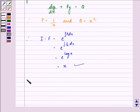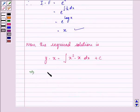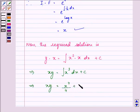Now the required solution is y into integrating factor equal to integral q into integrating factor dx plus c. That gives us xy is equal to integral x cube dx plus c. That is xy is equal to x raised to the power 4 upon 4 plus c.